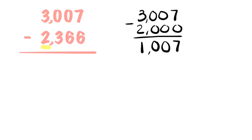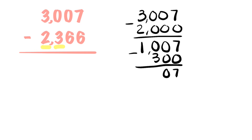Now we're only going to subtract the hundreds place, which is a 3, which makes 300. That would be 7, 0, and 0 take away 3 is impossible. So we have to go next door and borrow one of the thousands. Now we have 0 thousands left, and we can give that over to the hundreds, which means we have 10 hundreds. 10 take away 3 is 7.